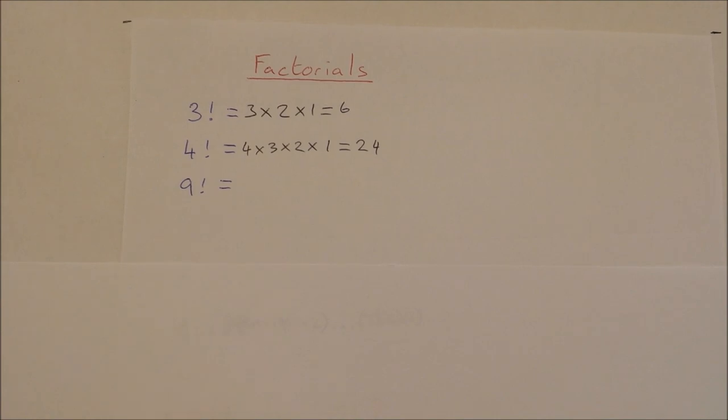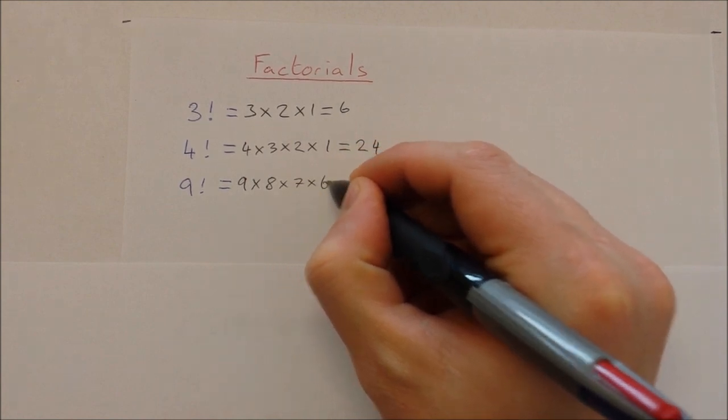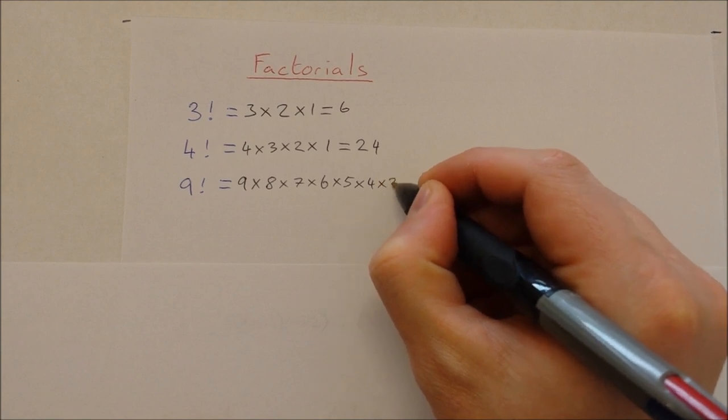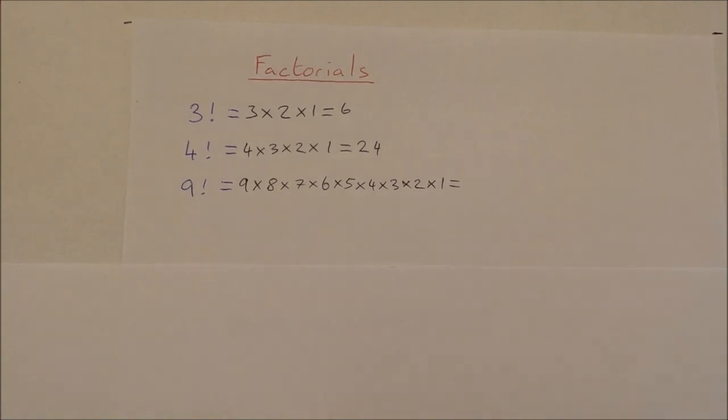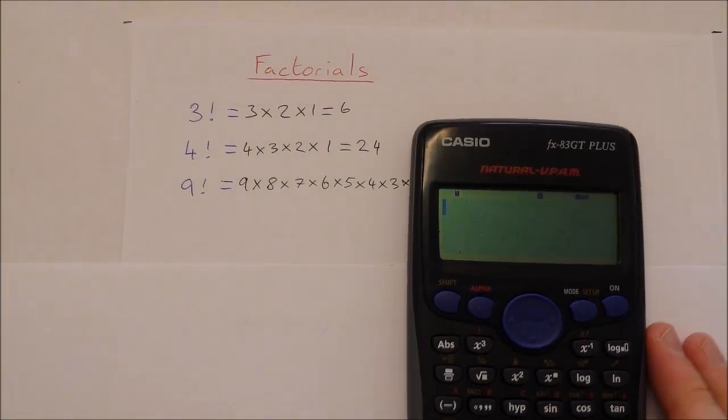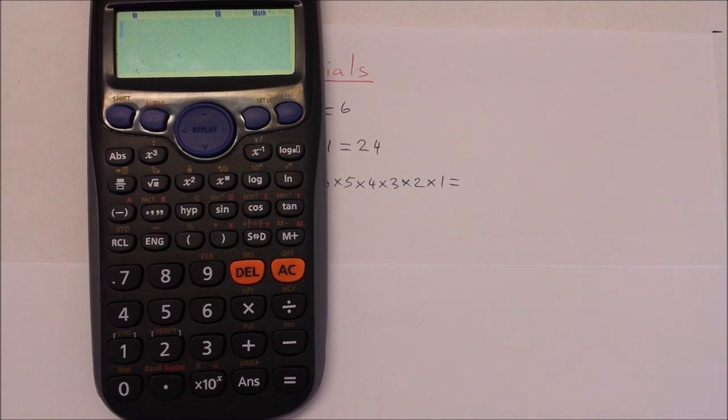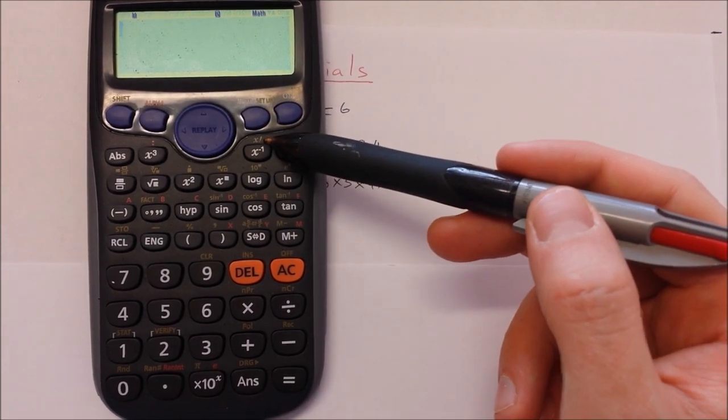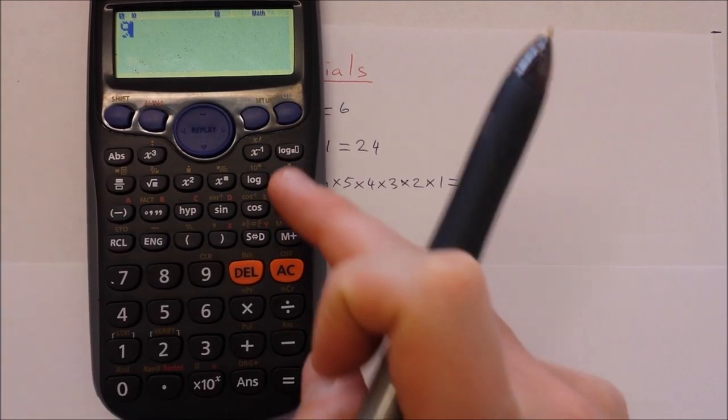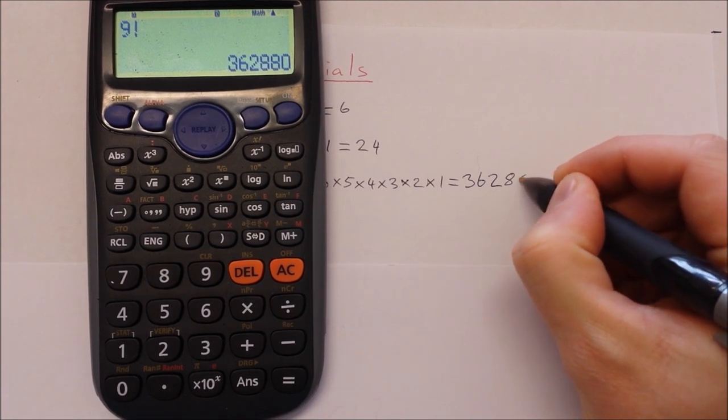I'm going to skip a few and go all the way up to 9 factorial. So that will be 9 multiplied by 8 multiplied by 7 multiplied by 6 multiplied by 5 multiplied by 4 multiplied by 3 multiplied by 2 multiplied by 1. And when we get to large numbers like this, it's definitely handier just to use our calculator. And on our calculator we have actually a button that will do this for us. So if we want to find 9 factorial, we're going to use this button here. So it will be shift and x factorial.